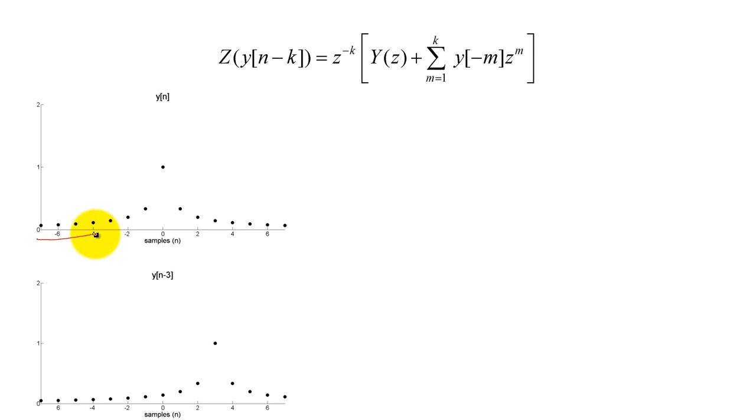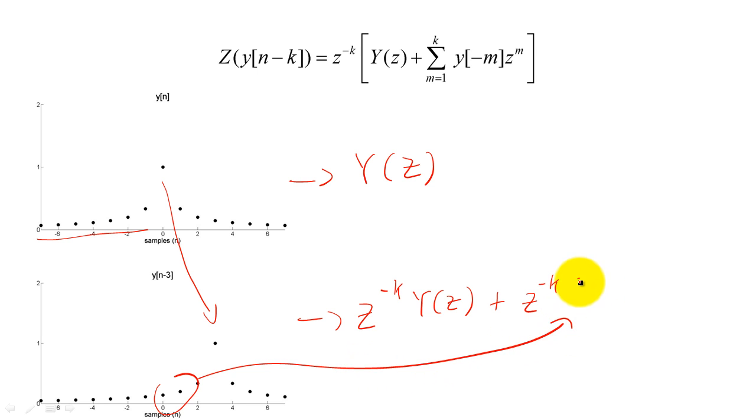If we do not truncate Y of n at 0, the delay property is more complicated. Essentially, we still multiply Y(z) by Z^(-k), but we also have to add in a second Z-Transform of the negatively-indexed samples that were previously excluded.